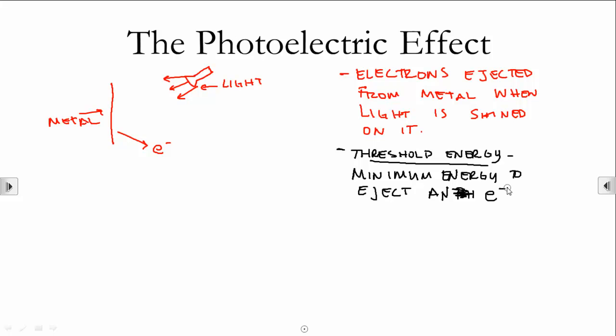However, if we have exactly the threshold energy or more than that, it will make the electron leave. So we're going to look at a formula. It's not a hard one. Energy of the ejected electron is equal to the energy of the photon minus the threshold energy.